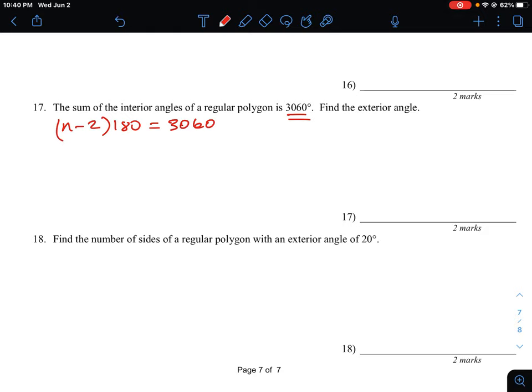In this case, what we're going to do is solve for n, and n will tell us how many sides there are in this polygon. This is a two-step question. You can expand the brackets: 180 times n is 180n, minus 2 times 180 is 360, equals 3060.